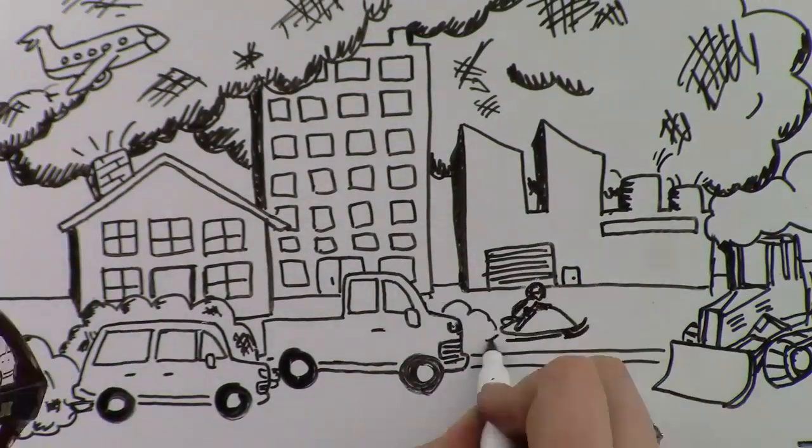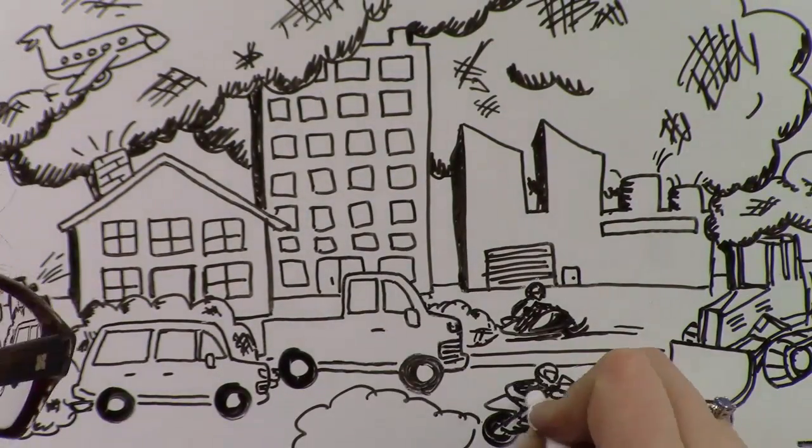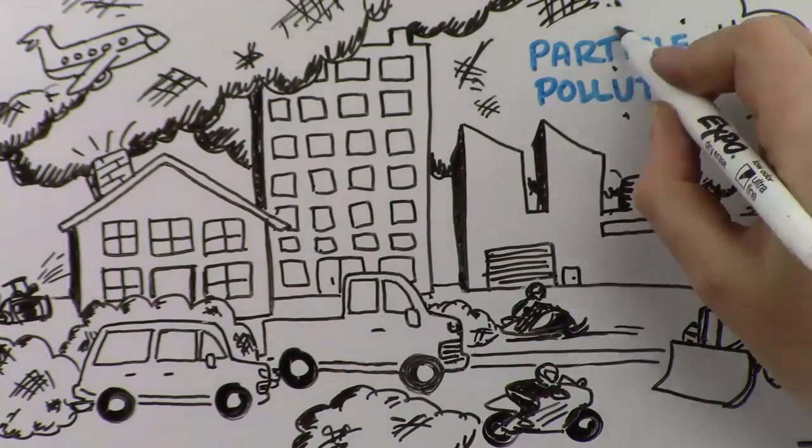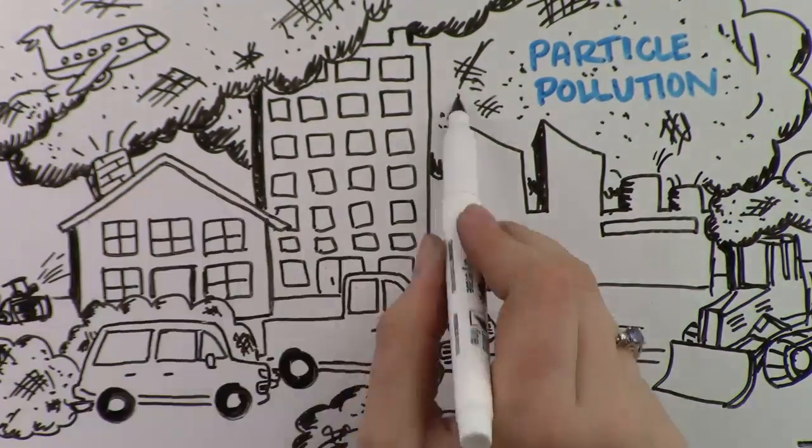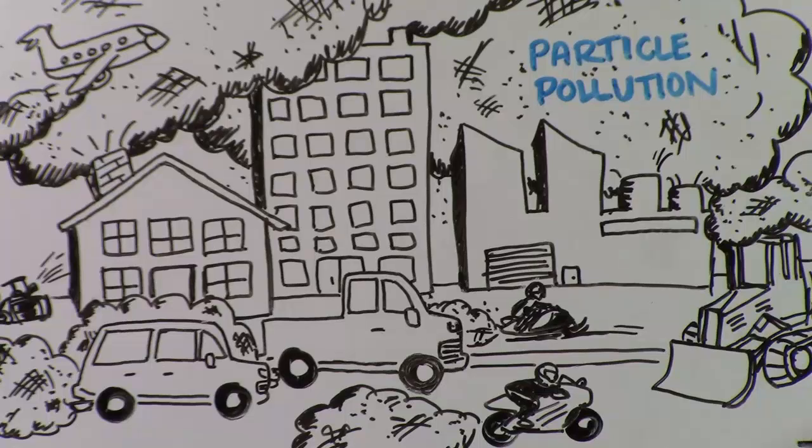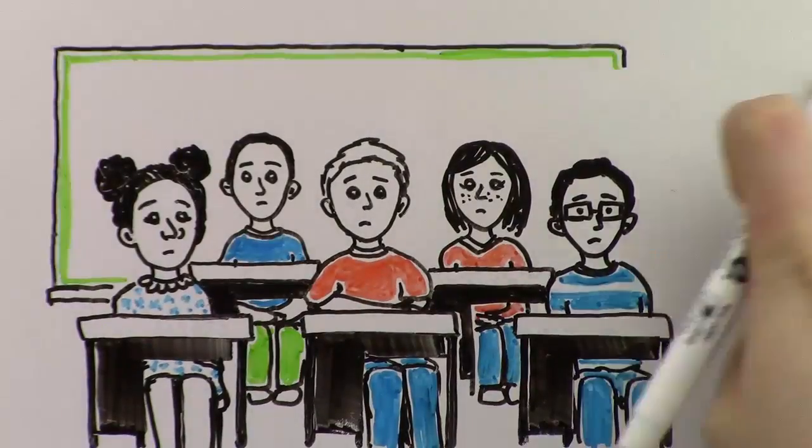That turns into particle pollution—tiny specks of grit so small they hang in the air. Everyone who lives here, you and me, contributes to the problem. So particles get trapped in the valley.